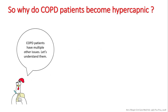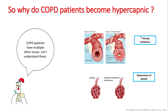So why do COPD patients become hypercapnic? COPD patients have multiple issues apart from dead space. There is increased airway resistance due to narrowing of airways and hypertrophy of smooth muscles, hypertrophy of mucous membranes, increased airway secretion, accompanied inflammation and swelling, and destruction of alveoli with decreased lung elasticity.